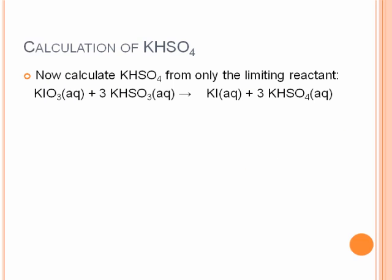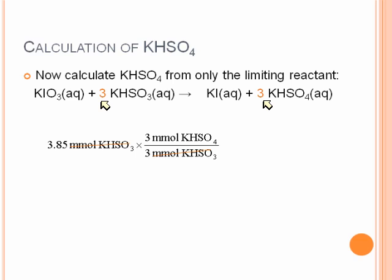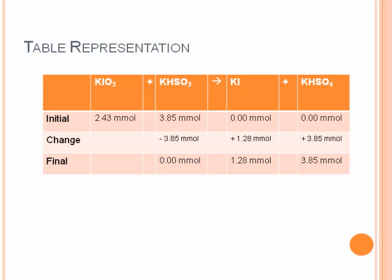Now we want to calculate KHSO4 from only the limiting reactant now that we know what that is. We're going to start with 3.85 millimoles of KHSO3. Using our mole ratio, we've got now a 3 to 3 relationship, and so it should have equal numbers of moles. So we get 3.85 millimoles of KHSO4. If we go back to our table now, we've added in the KHSO4 of 3.85 millimoles.